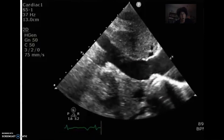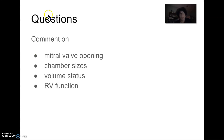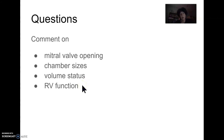So what did we find? Mitral valve opening was decreased. Chamber sizes: the RV was moderately enlarged, the LV and RV were enlarged, and the RA was severely enlarged with bi-atrial enlargement. Volume status: certainly not on the empty side, so restrict volume. RV function was decreased, both in terms of RV base and RV free wall. Lots of information here that you can build your anesthetic plan on. I hope you found the images fun to watch — I hope to get you some more videos. Thank you.